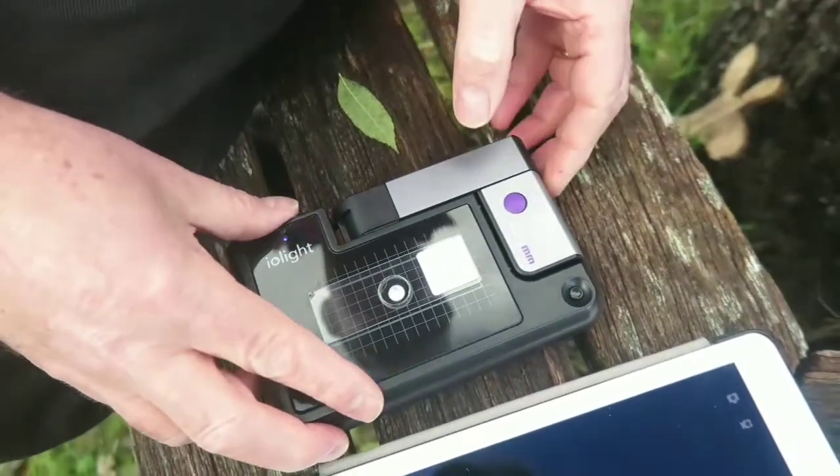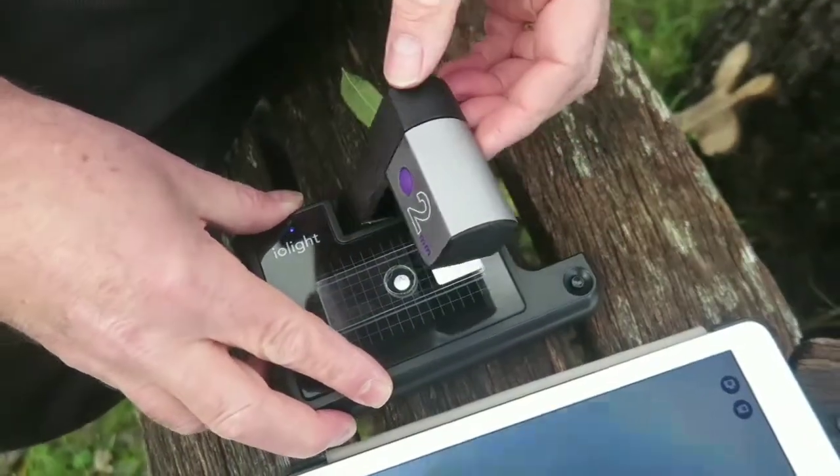We then just simply unfold the mast by hand like this and immediately you can see on the screen we have an image. It's not in focus but it is an image.